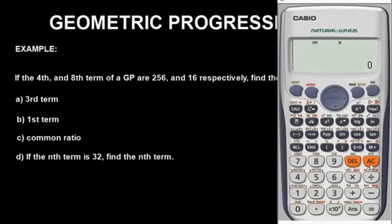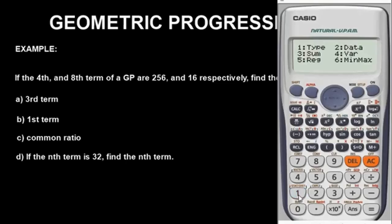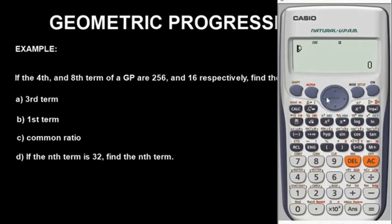The next thing we do is find the third term, first term, common ratio, and the nth term. To do that, press shift button 1 — when you look at button 1 on your calculator closely, you will see 'statistics' on top of it. Press button 1 and go to category 5, then category 5 again. This symbol is what we use to find the third term, first term, and common ratio. Come in front of this symbol, press 3, then press equals. Our third term is 512.